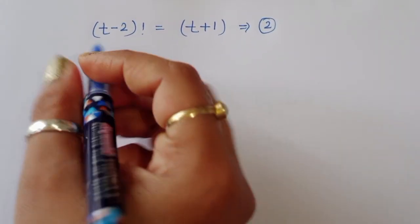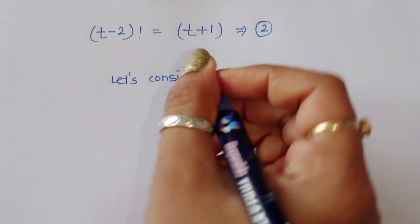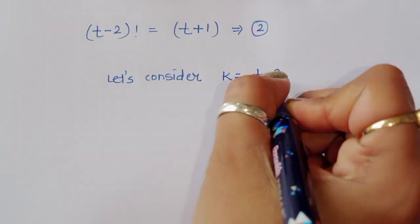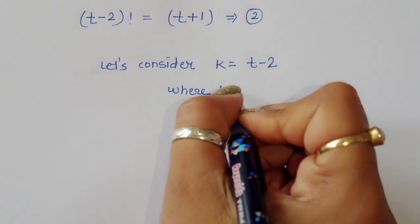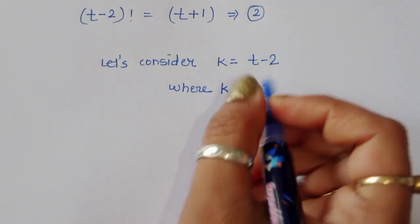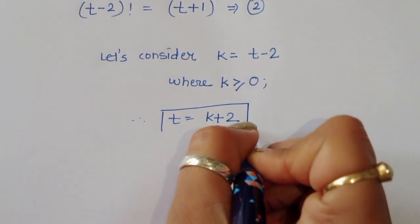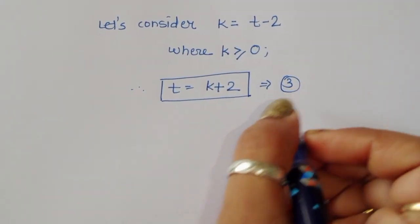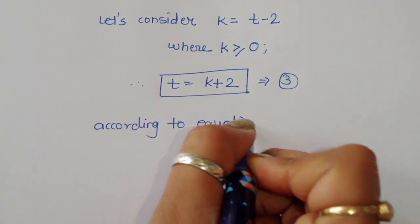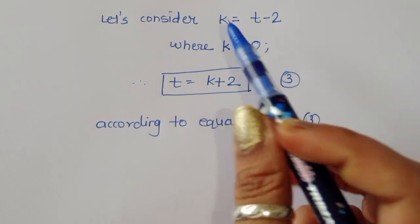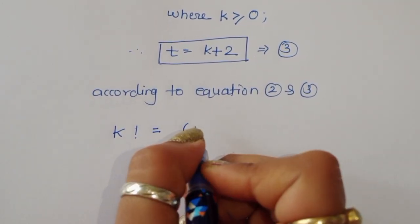Now let's consider a substitution: let k equal t minus 2, where k is greater than or equal to 0. Therefore, t equals k plus 2. This is equation number 3. According to equations 2 and 3, t minus 2 is k.